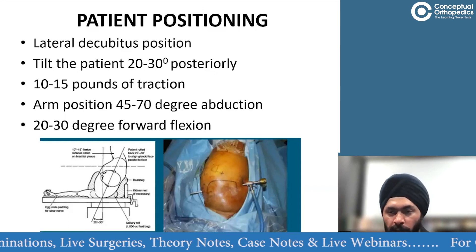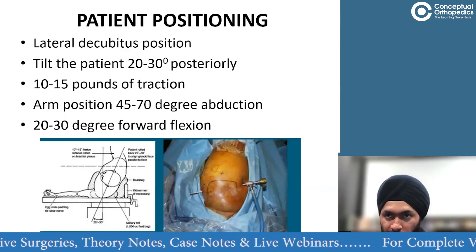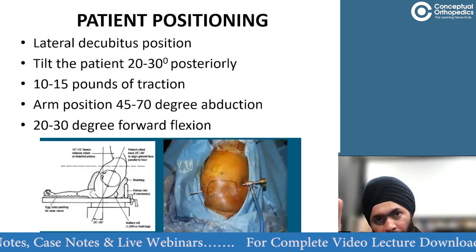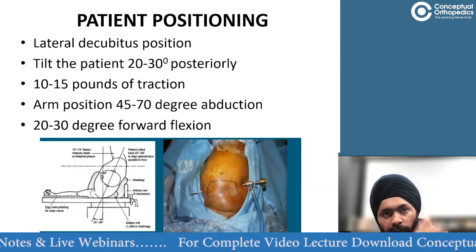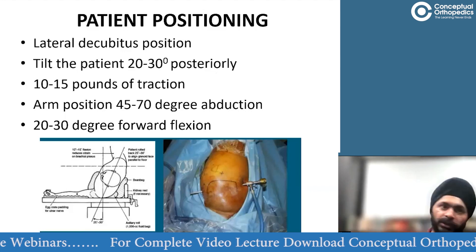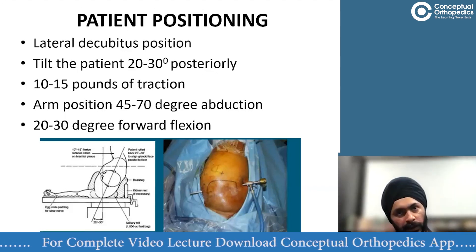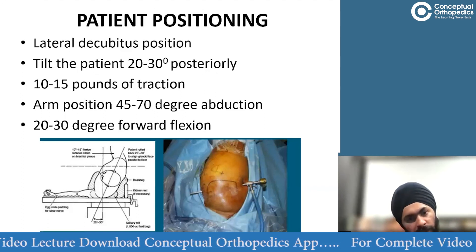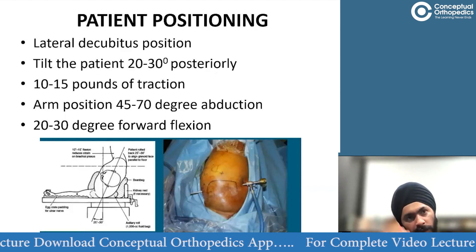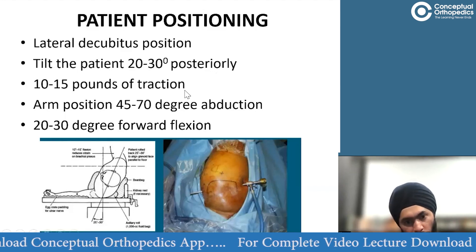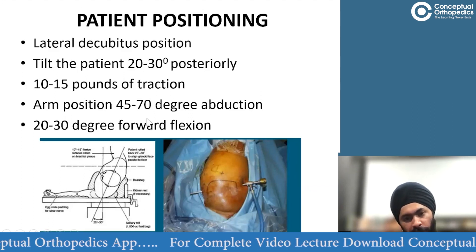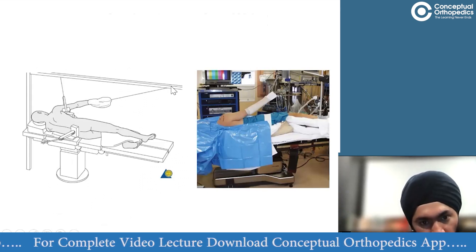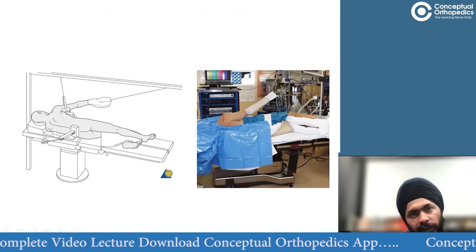The reason you tilt the patient 20 to 30 degrees posteriorly is that the scapula faces anteriorly about 20 to 30 degrees along the chest wall, making the glenoid face anteriorly. Tilting the patient 30 degrees posteriorly makes the glenoid parallel to the ground. Traction of about 3 kg is used, with the arm in 20 to 30 degrees of forward flexion and 45 to 70 degrees of abduction.